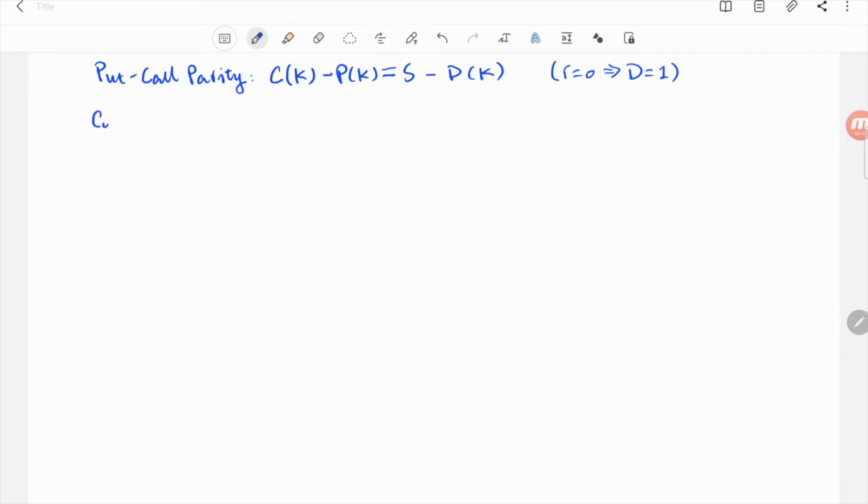To derive this parity equation, let's construct a portfolio. In this portfolio, we're going to long a call option, so you buy a call with price C, then we're going to short or write a put option with price P.